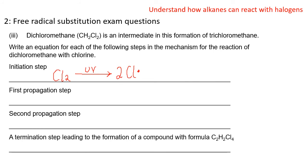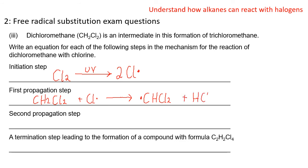Now it asks for two propagation steps. Our first propagation step must involve the CH₂Cl₂, plus one of our chlorine radicals from the initiation step — do not forget to put that dot in. What we've done here is removed a hydrogen, so we now have CHCl₂ dot. The dot must go on the carbon atom. And we also produce HCl, the famous misty fumes.